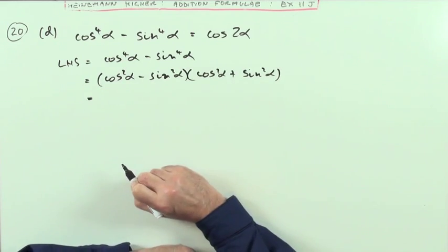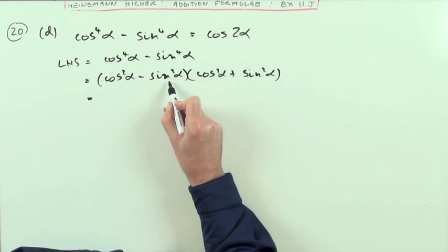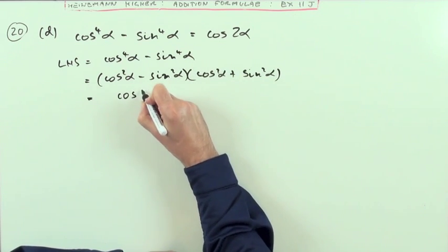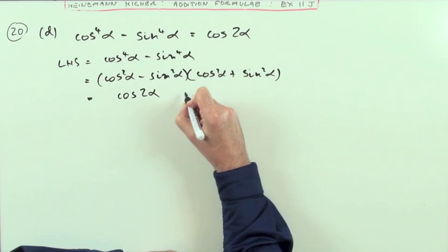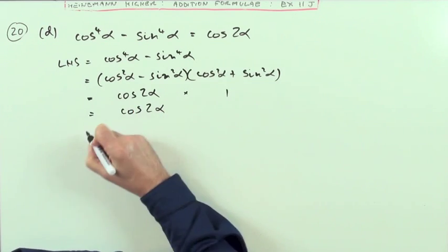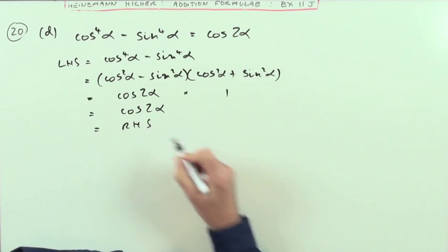Now, I know that part comes to 1, and that part is the expansion of cos 2 alpha. So, maybe I'll just write it down that way. That's cos 2 alpha, and that's 1, so it's just cos 2 alpha, which equals the right-hand side.